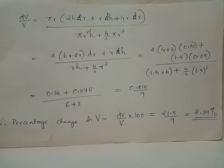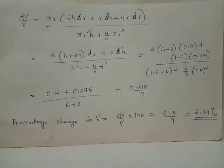Giving the specific value, the right-hand side becomes 0.14 plus 0.075 upon 6 plus 3, that is dv by v equals 0.215 divided by 9. Thus we have percentage change in volume of balloon will be dv by v into 100, which is 0.215 by 9 into 100, which is obtained as 21.5 by 9, which equals 2.39 percentage.